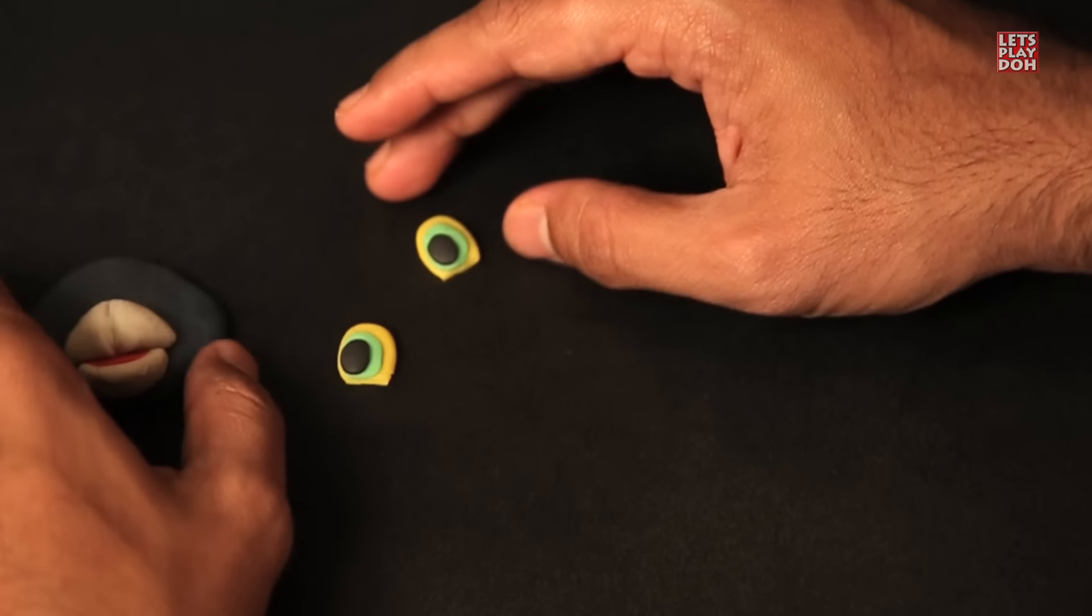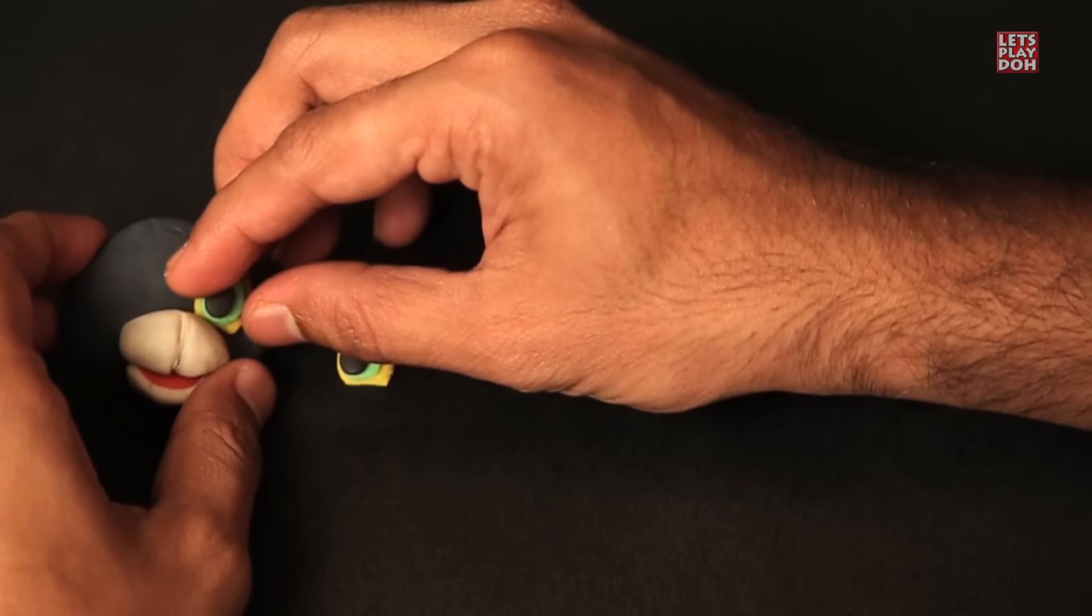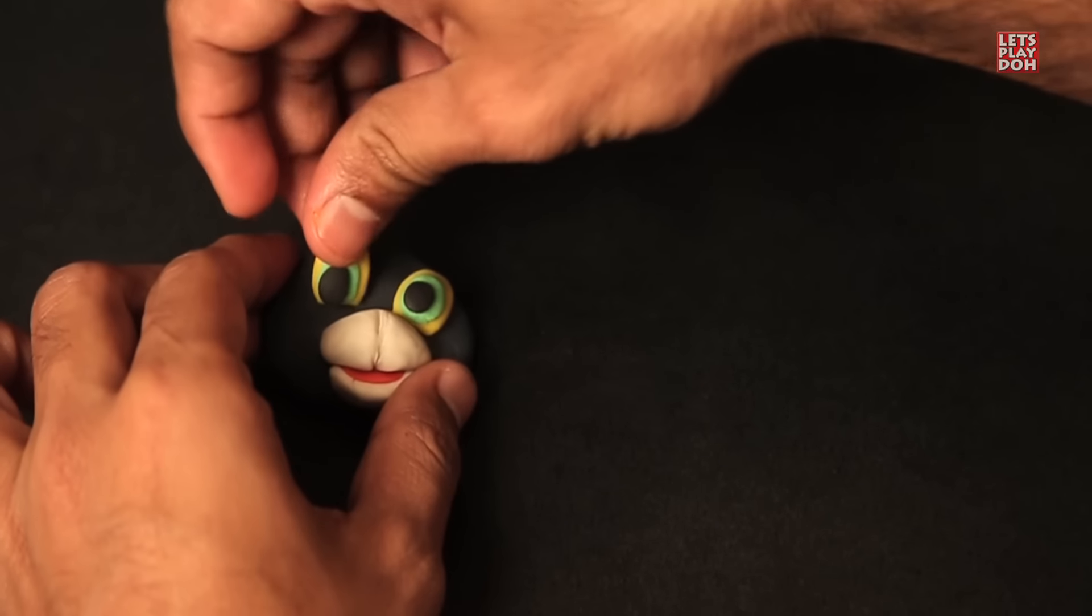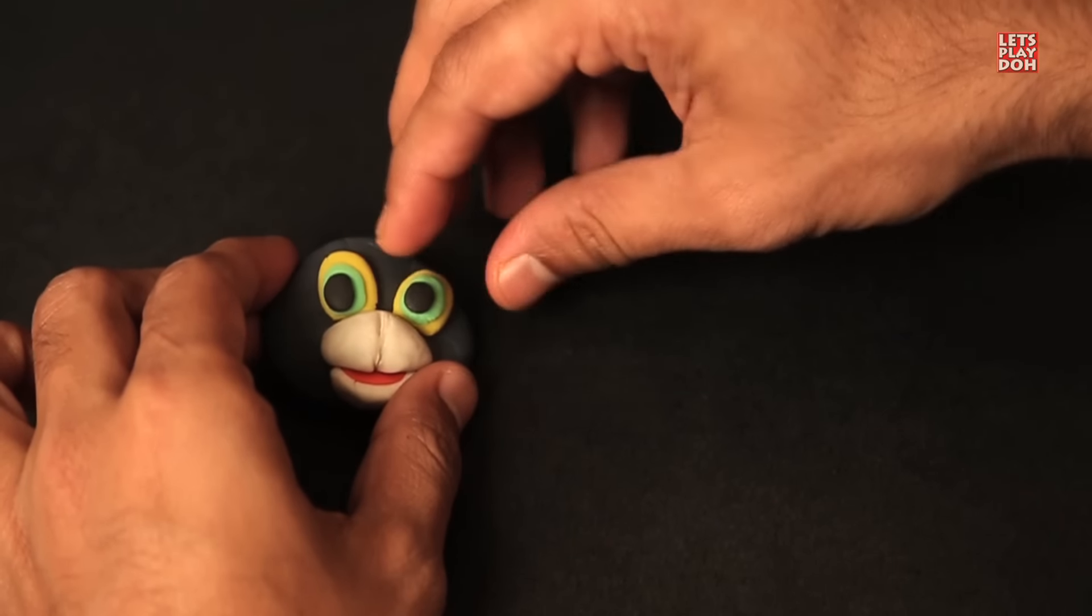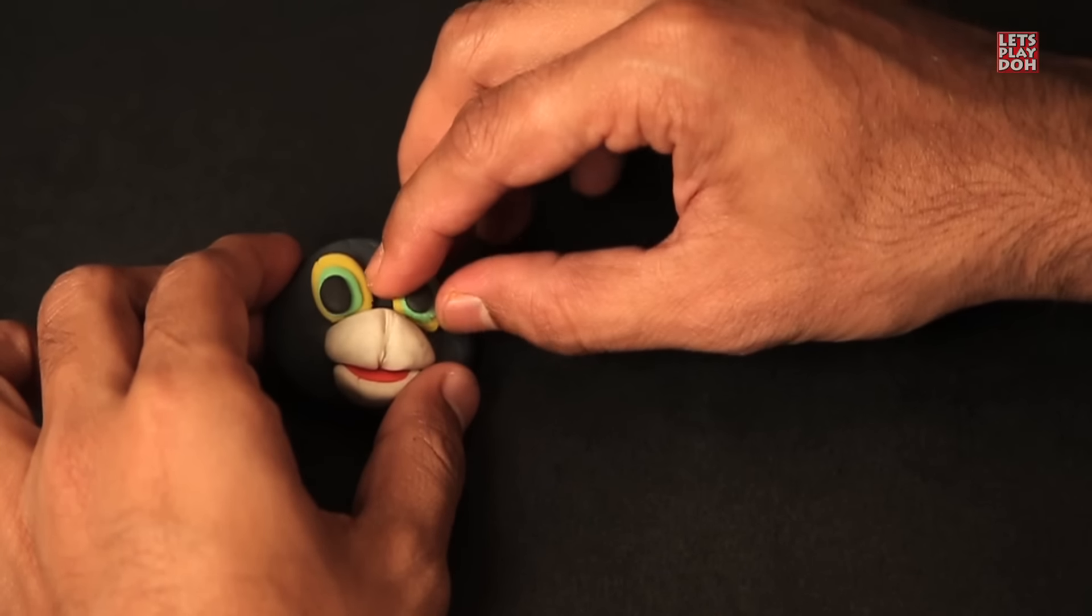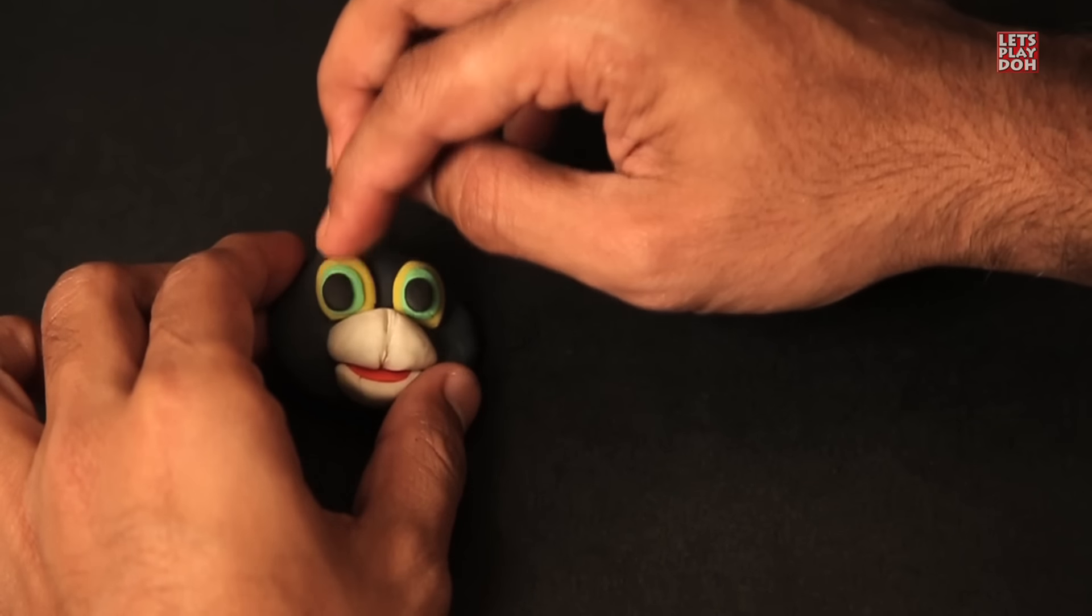Now let's take the whole thing: the yellow eye, the green part of the eyeball, and the black pupil. Go ahead and set it right on top of that mouth area. And you want to press down so that it's sticking. Play-Doh sticks very well, so you don't have to press too hard.